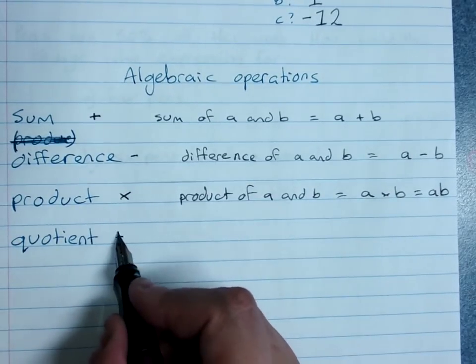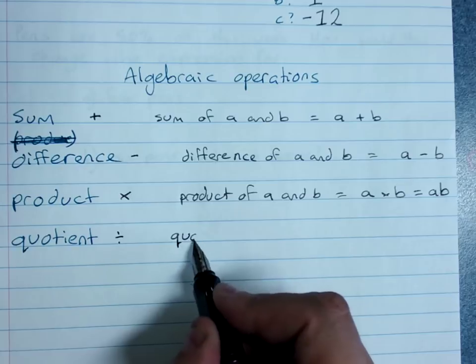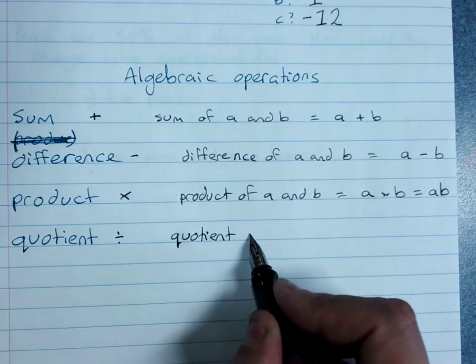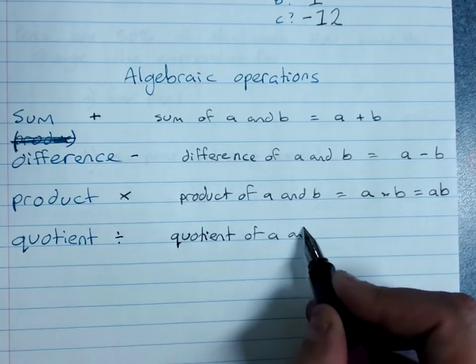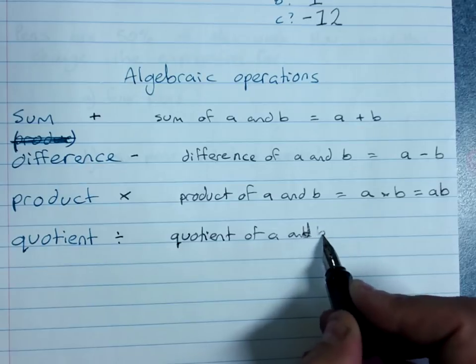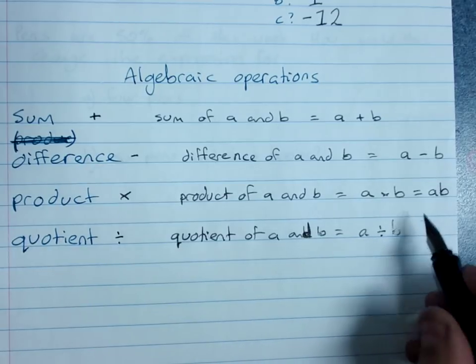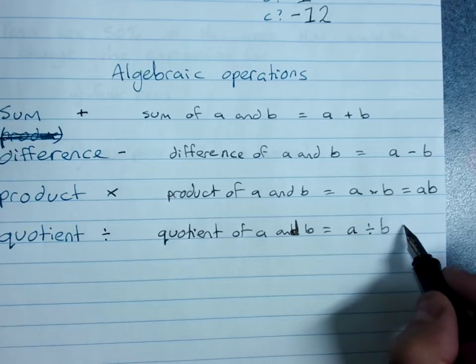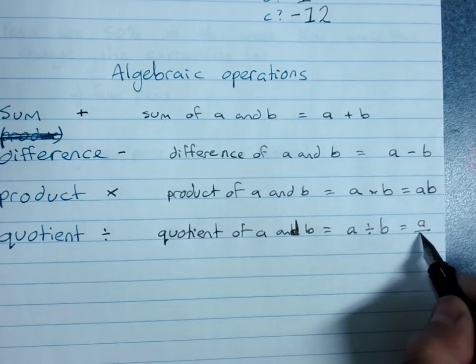The quotient is divide. So the quotient of a and b is a divided by b. And again, we write that as a over b.